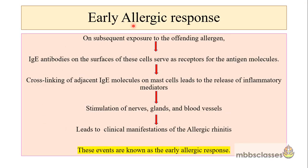On subsequent exposure to the offending allergens, the IgE antibodies present on the surface of mast cells get attached to the allergens, cross-linking occurs and this leads to the release of inflammatory mediators which stimulate nerves, glands and blood vessels. When it leads to clinical manifestations, this event is called the early allergic response.